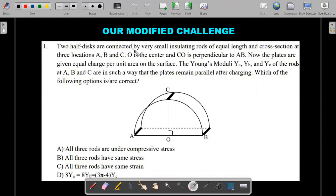Here's the formal wording of the question. Two half discs are connected by very small insulating rods of equal length. So half discs are nothing but semicircular discs, connected with three rods as you could see A, B and C. O is the center of the base, and CO is perpendicular to AB. It's a simple parallel plates system.